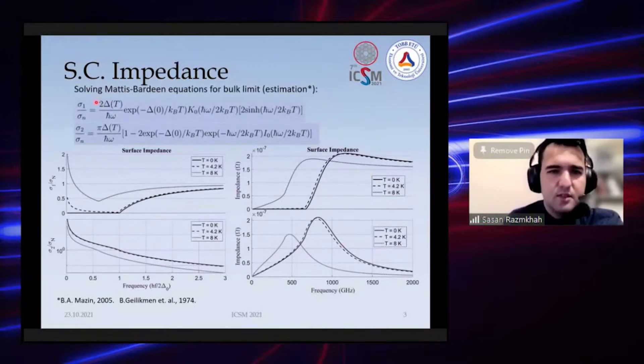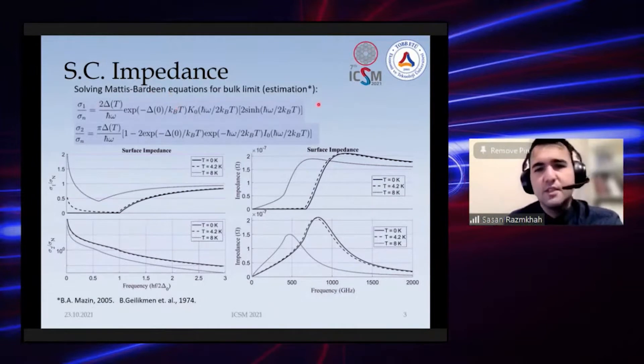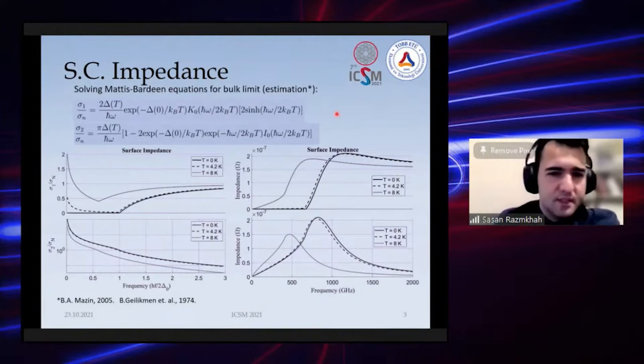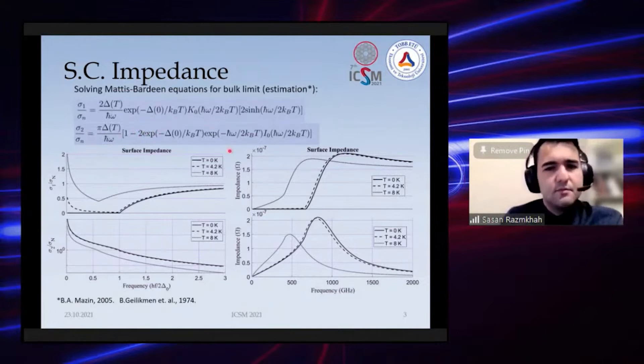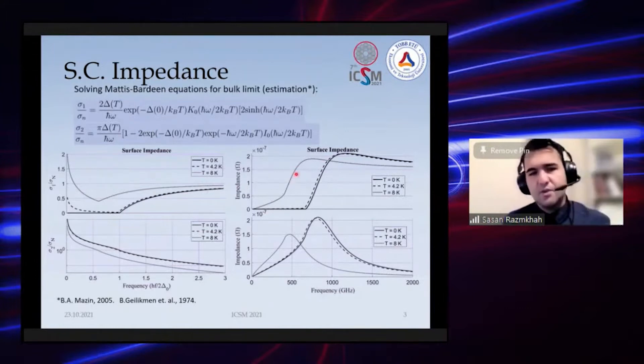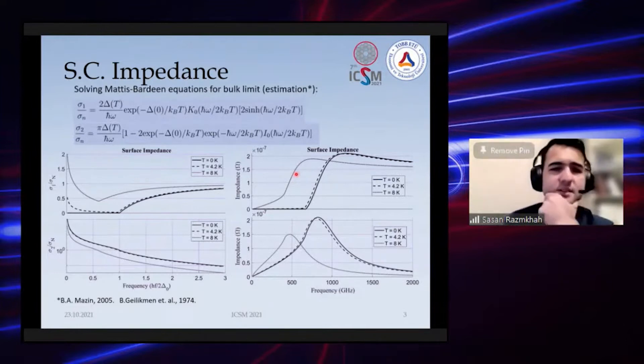You're familiar with this model—the infamous Mattis-Bardeen equation that we use for calculating surface impedance of superconductors in higher frequencies. With this estimation we calculate the surface impedance of our niobium films that we're using for making superconductor integrated circuits.